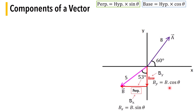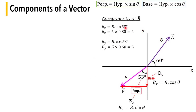Using these two formulas, we can find Bx and By by substituting the value of B and angle theta. Bx equals B sine theta and By equals B cos theta. We get Bx equal to 4 and By equal to 3, using sine of 53 and cos of 53.